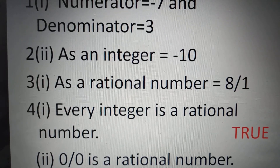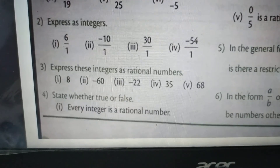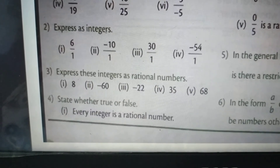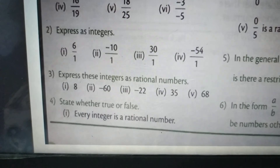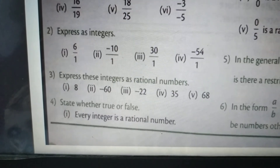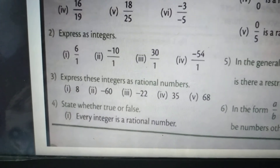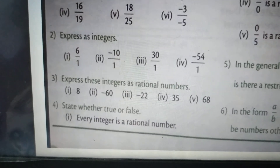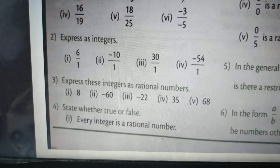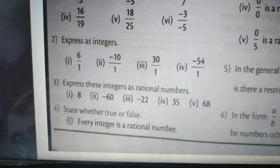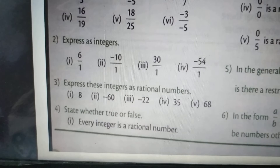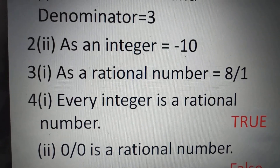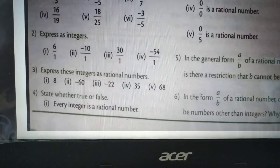Question 3, first part: express the integer 8 as a rational number. The number 8 needs to be expressed as a rational number. So 8 can be written as 8/1. The answer is that 8 can be expressed as the rational number 8/1.